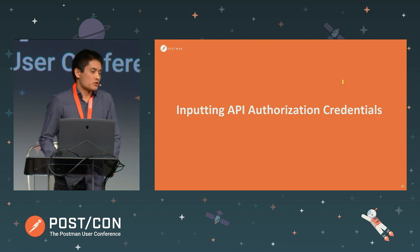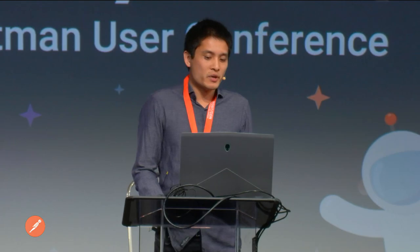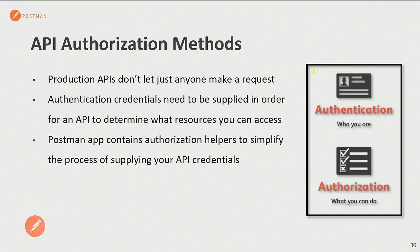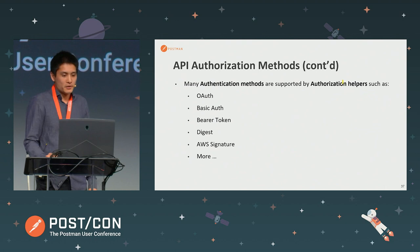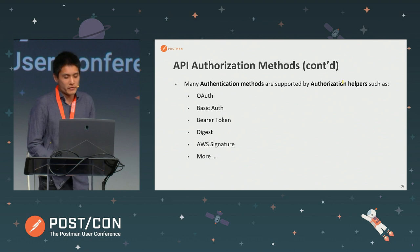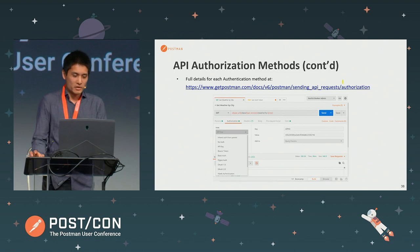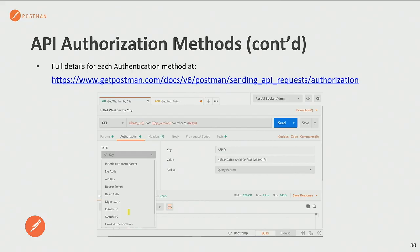Most APIs won't let you send requests without some sort of authentication or authorization credentials, especially production APIs. You need to supply credentials so that the API can determine whether you're allowed to access it and what resources you can access. The Postman application has what we call authorization helpers to simplify the process of supplying your API credentials. There are many authentication methods supported: OAuth, basic authentication, bearer tokens, AWS signature, and many more options. If you want more details about each option, there is a documentation page.